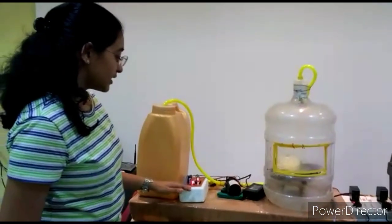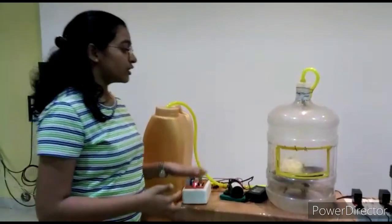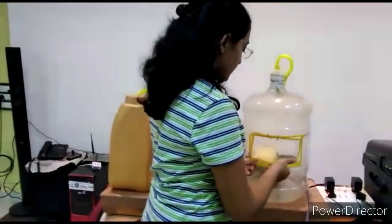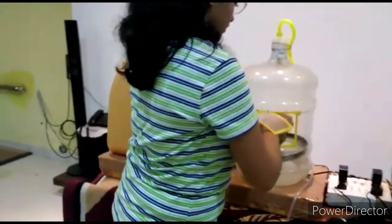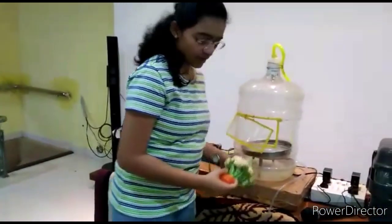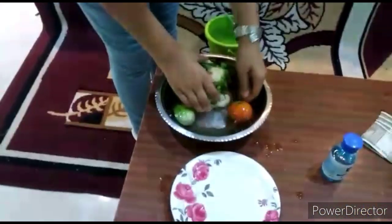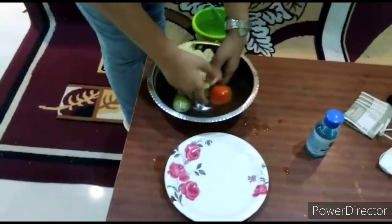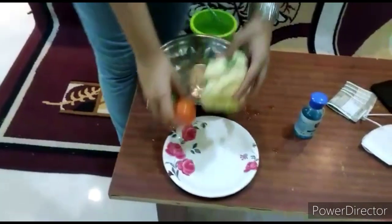The window is also made at the gallon for the handling of items to be sanitized. The timer circuit also helps. As the timer is off, we can take the vegetables out from the gallon. Here I have some clean water. I will wash the vegetables with it. And now these vegetables are ready to use.